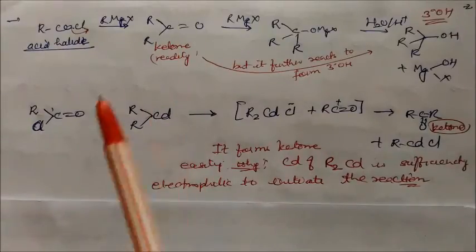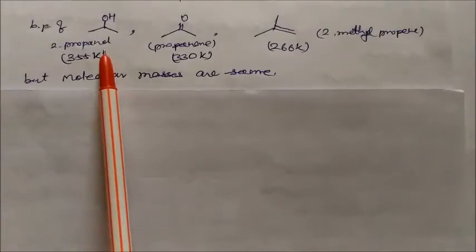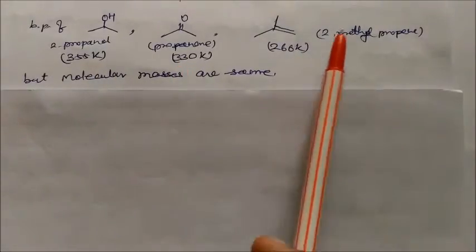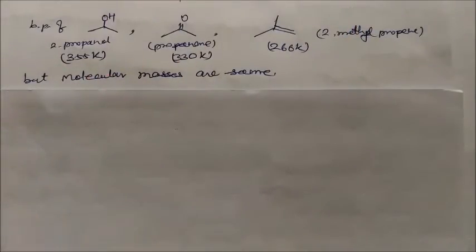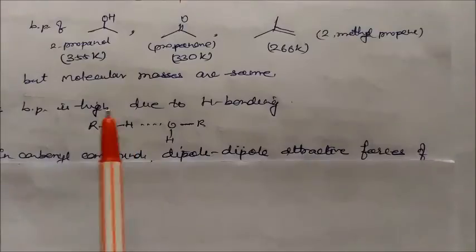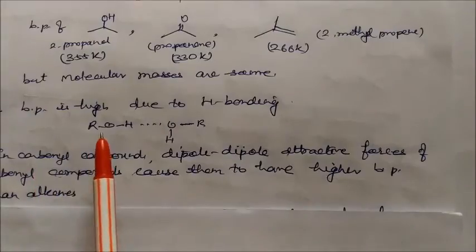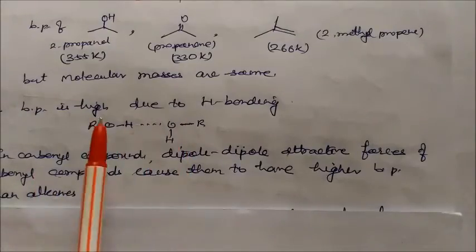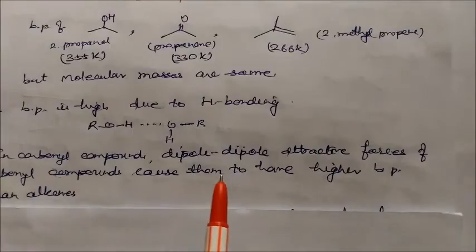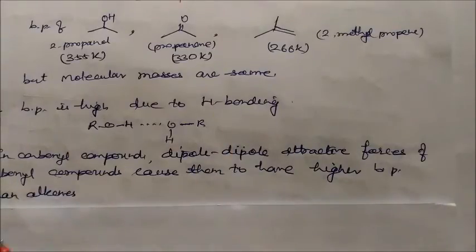The boiling points of propanone and 2-methylpropene are 355 K and 330 K respectively, though their molecular masses are almost the same. Boiling point depends on factors like hydrogen bonding and van der Waals forces. In case of alcohols, the boiling point is high due to hydrogen bonding. In carbonyl compounds, dipole-dipole attraction forces cause them to have a higher boiling point than alkenes.